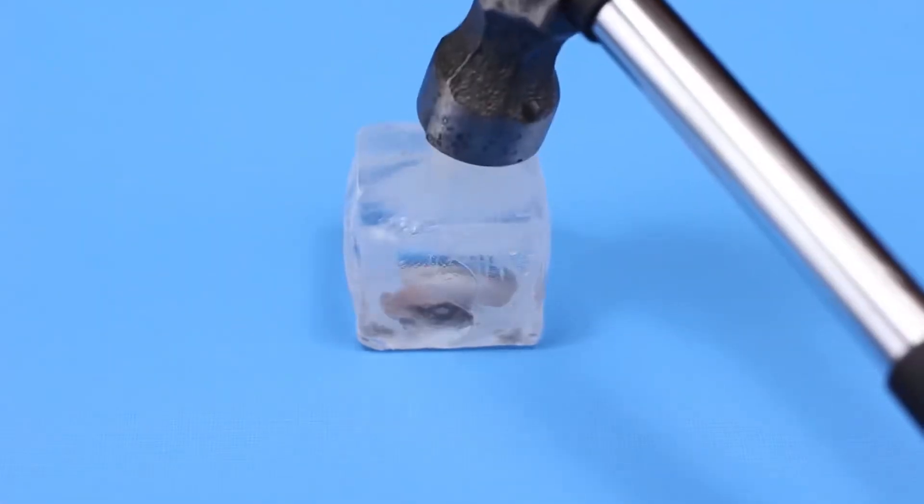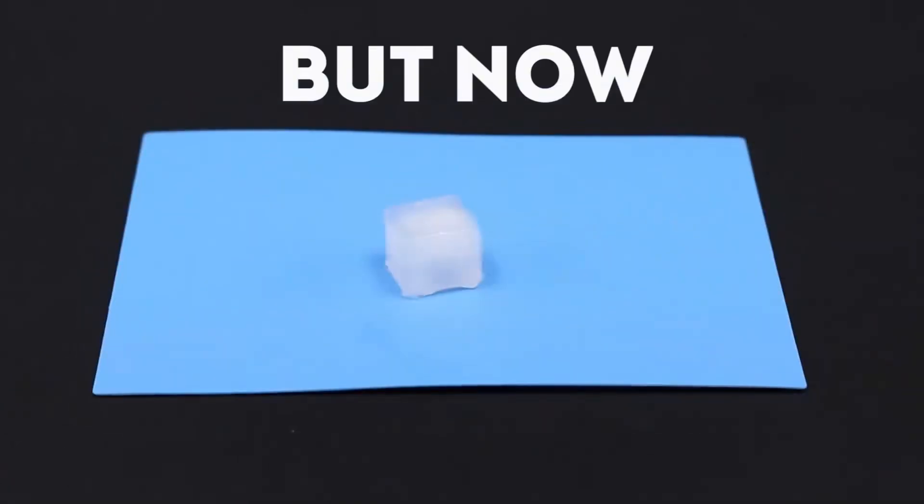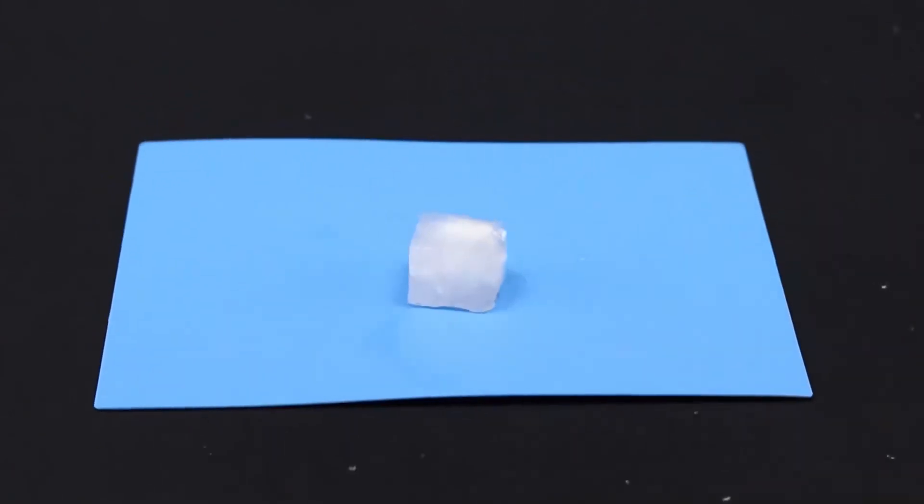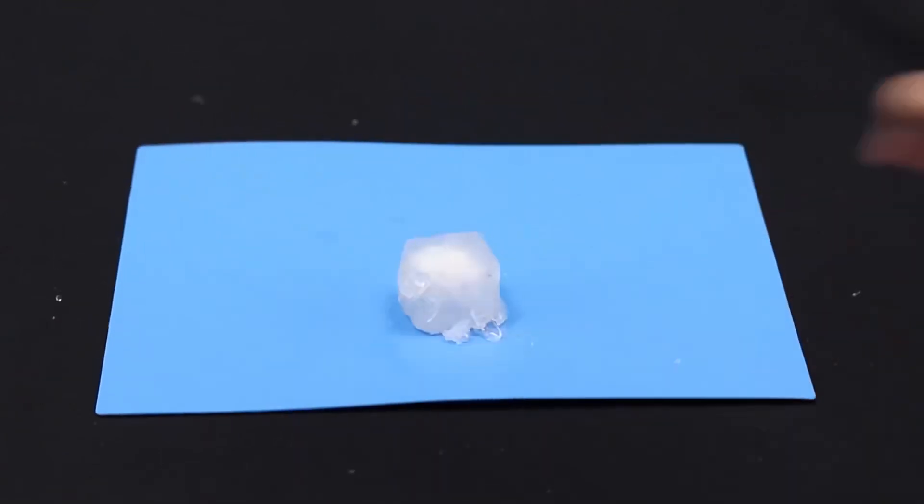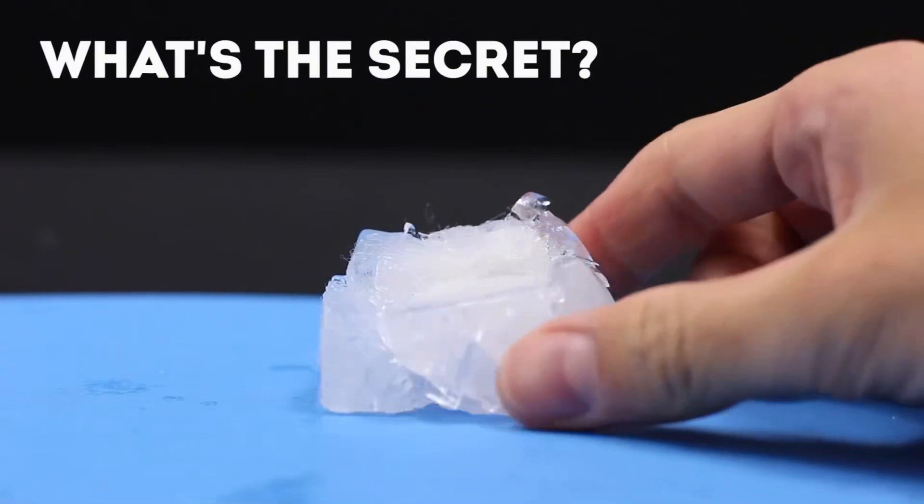Let's take an ordinary ice cube and hit it with the hammer. It instantly shatters into small pieces. And now an unusual cube. The first blow didn't hurt him. And the second. And the third. And fourth. It's like it's indestructible. What's its secret? It's synthetic insulation.